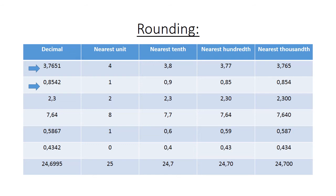The second example: 0,8542. Rounded to the nearest unit is 1. The nearest 10 (first decimal digit) is 0,9. The nearest 100 is 0,85. And the nearest 1000 is 0,854.